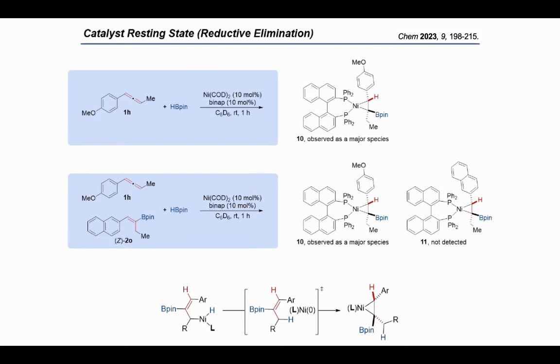We also detected the catalyst resting state of this reaction. In the reaction of internal allenes and HB-pin catalyzed by nickel-COD and BINAP, the BINAP-liganded nickel-olefin complex 10 was observed as a major nickel species during the reaction. So, the BINAP-liganded nickel-olefin complex can be regarded as the catalyst resting state of this reaction. In the presence of another equivalent 2a, we monitored the reaction of internal allenes with HB-pin catalyzed by nickel and BINAP, by phosphine NMR spectroscopy. Nickel complex 10 can also be observed as a major species during this reaction, and the nickel species derived from the product 2a cannot be detected, which demonstrates that after the reductive elimination step, the newly generated alkenyl boronate re-coordinated with the nickel fragment immediately without the dissociation step.